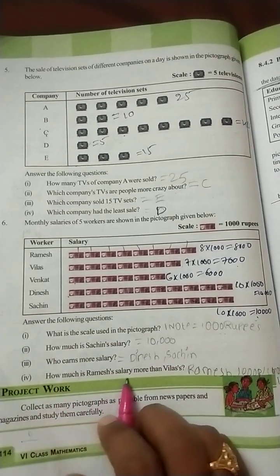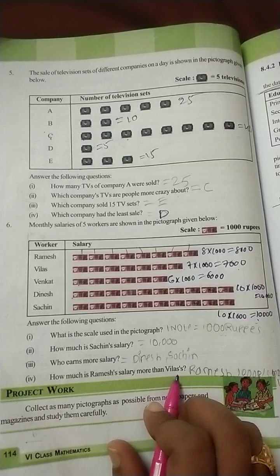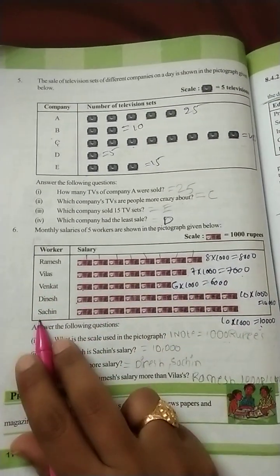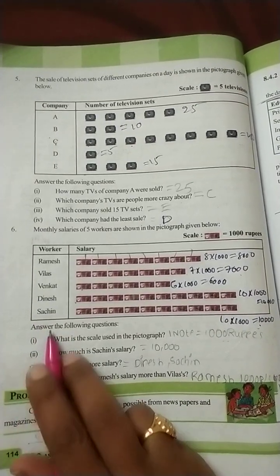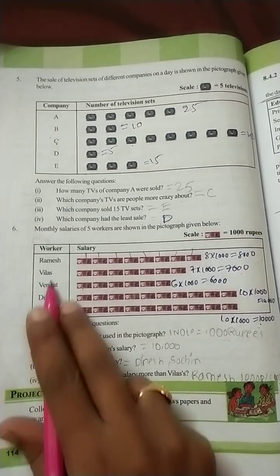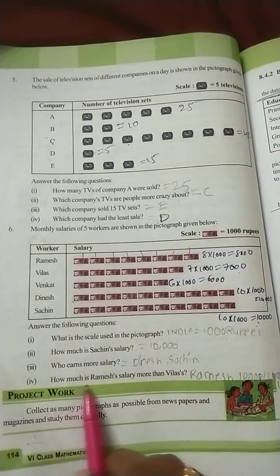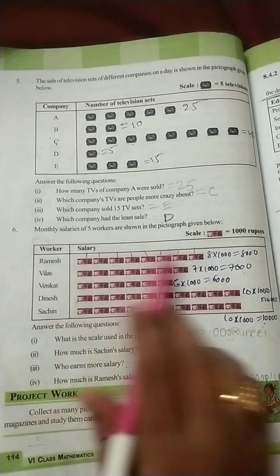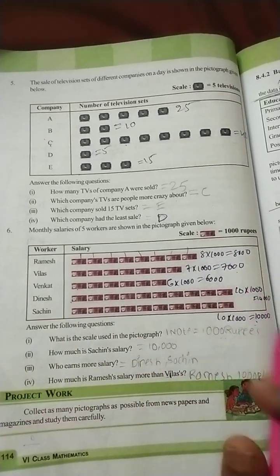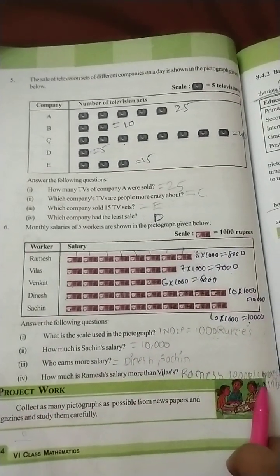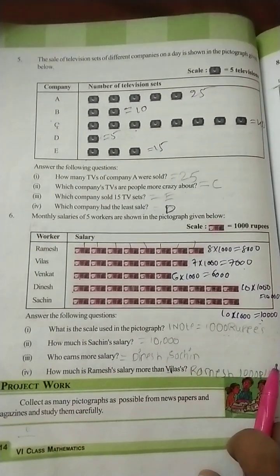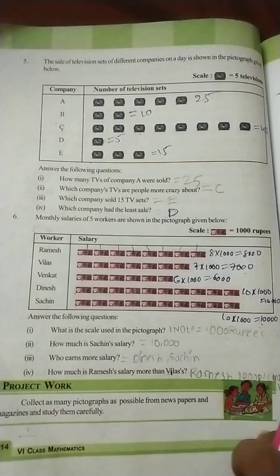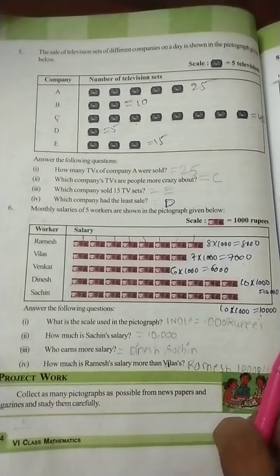Now, how much is Ramesh's salary more than Vilas's salary? So here Vilas's salary is 7,000. Ramesh's salary 8,000. See, Ramesh's salary more than Vilas's salary. Vilas's 7,000, Ramesh's 8,000. How much more? 1,000 rupees more, extra. This is the fifth and sixth sums. Over. Now this exercise over.